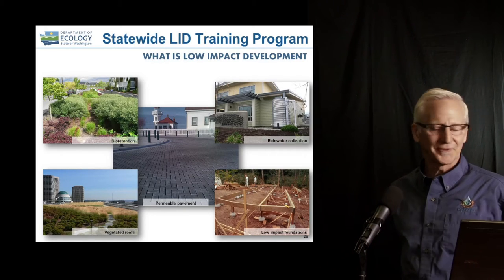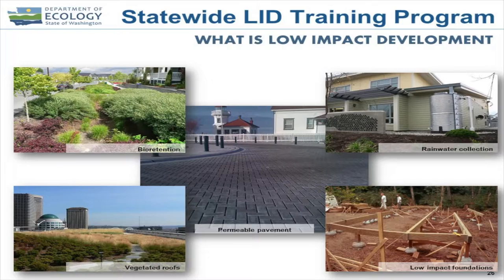Vegetated roofs — that's the old WAMU Washington Mutual building in Seattle. I'm not sure what it is now; is it Chase? Rainwater collection — that's a project from Bellingham.